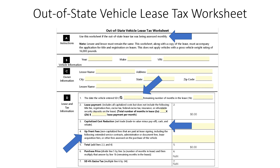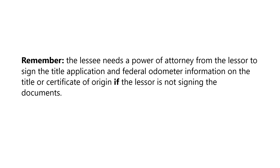At the end of the lease, if they choose to purchase the vehicle, they will again pay tax on their lease and purchase price. Remember that the lessee needs a power of attorney from the lessor to sign title applications, federal or odometer information, the MSO or the title, if the lessor is not signing those documents.